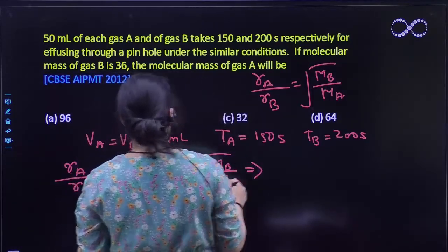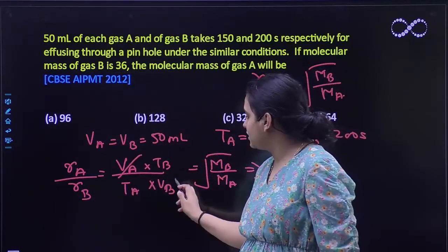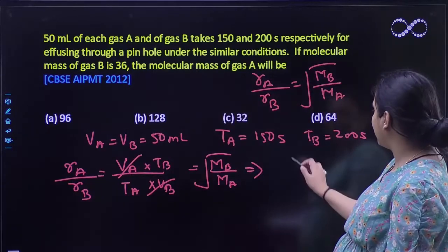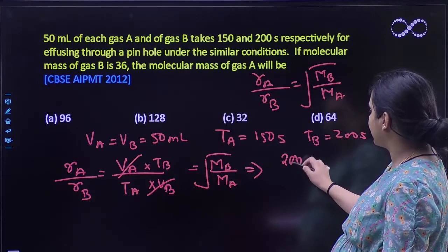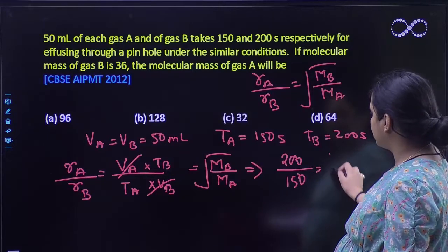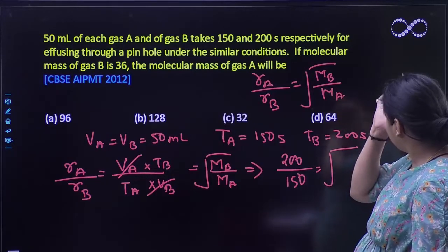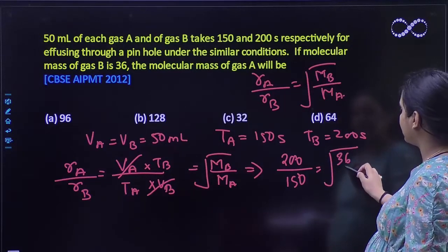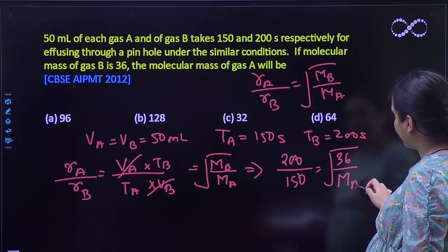Since the volumes are equal and cancel out, time of B which is 200 seconds divided by 150 seconds equals square root of molar mass of B over molar mass of A. The molar mass of gas B given is 36 and you have to find out A.